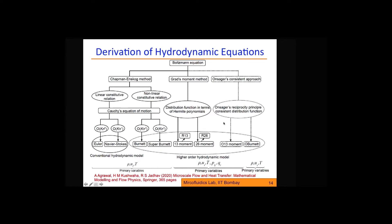To derive equations that go beyond Navier-Stokes, we change our starting point to the Boltzmann equation. The Boltzmann equation can be solved in two different ways: the Chapman-Enskog expansion, or the Grad moment method. Using Chapman-Enskog, one can derive a whole hierarchy of equations depending on what order of terms are retained — Euler equations, Navier-Stokes equations, or higher-order equations like the Burnett and super-Burnett equations.